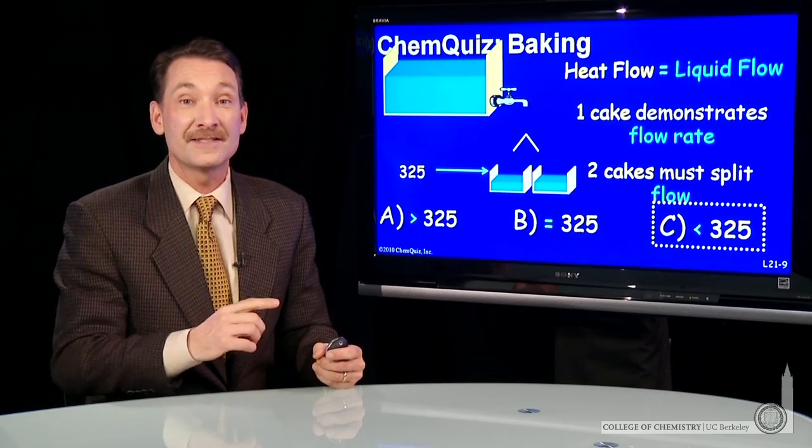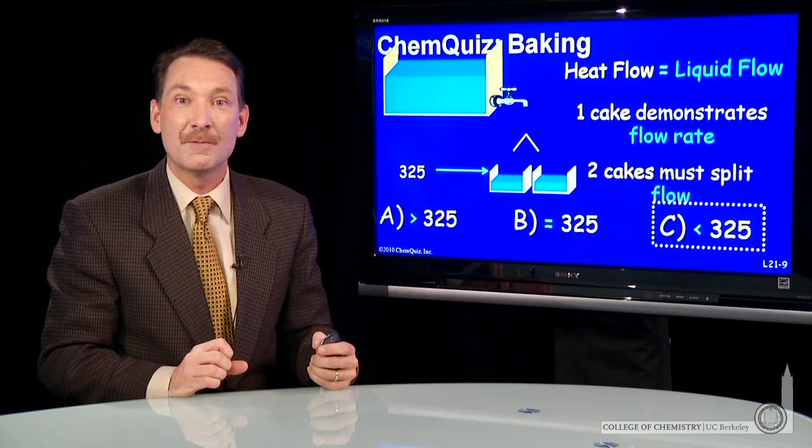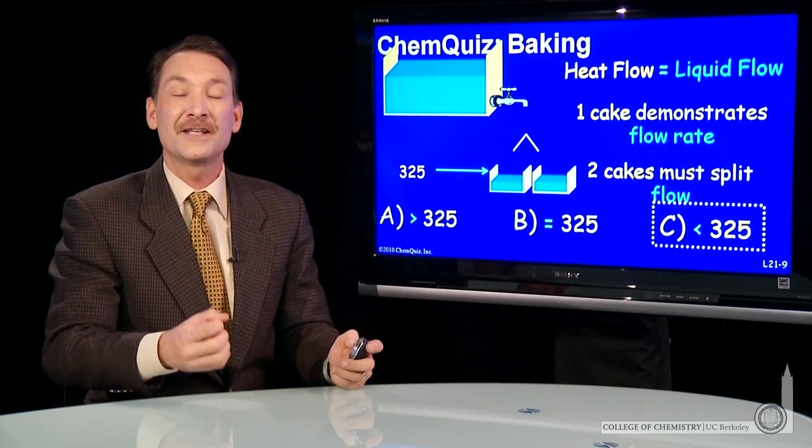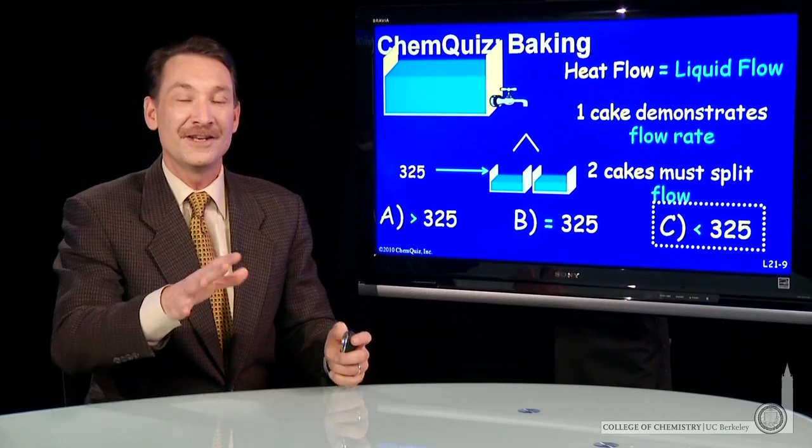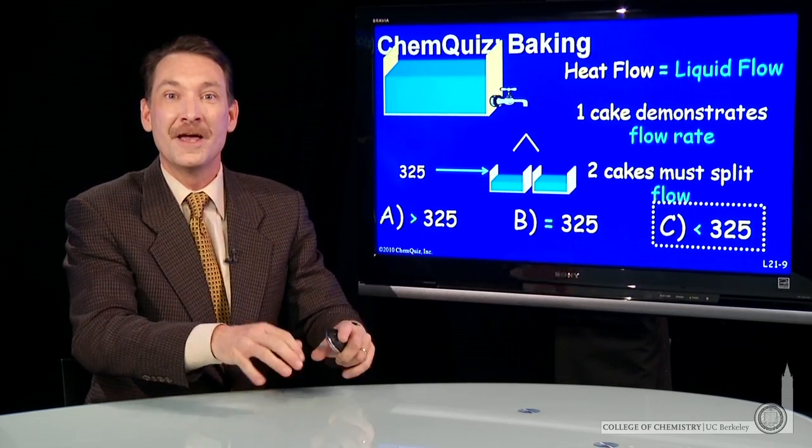But that's for one cake in a standard oven. If you put two cakes or five cakes in that same oven, the heat flow will be distributed between all the cakes. You'll effectively overload the oven.